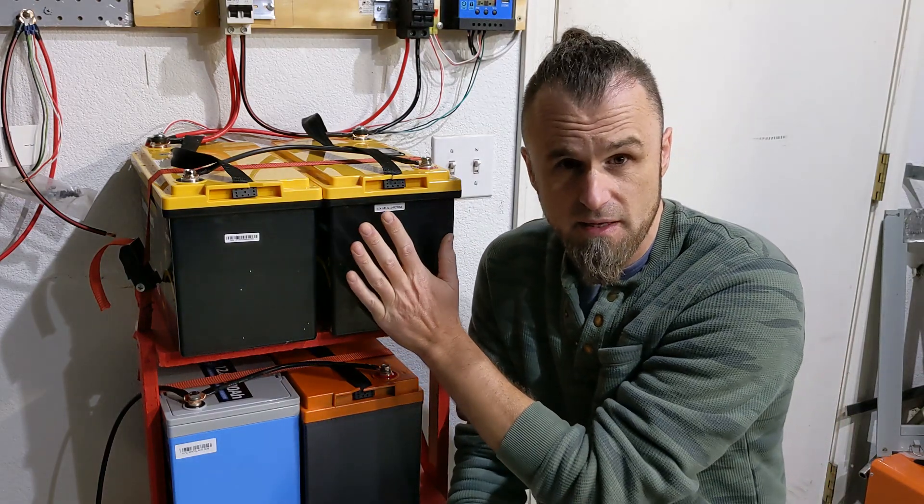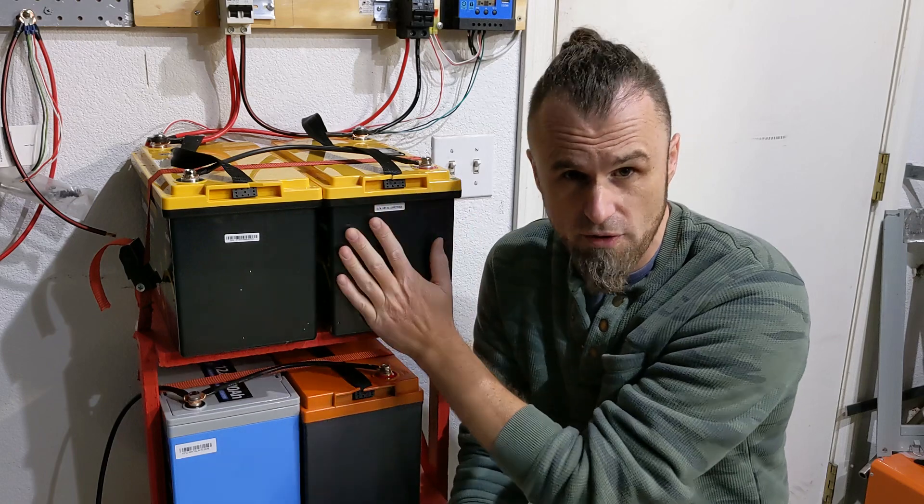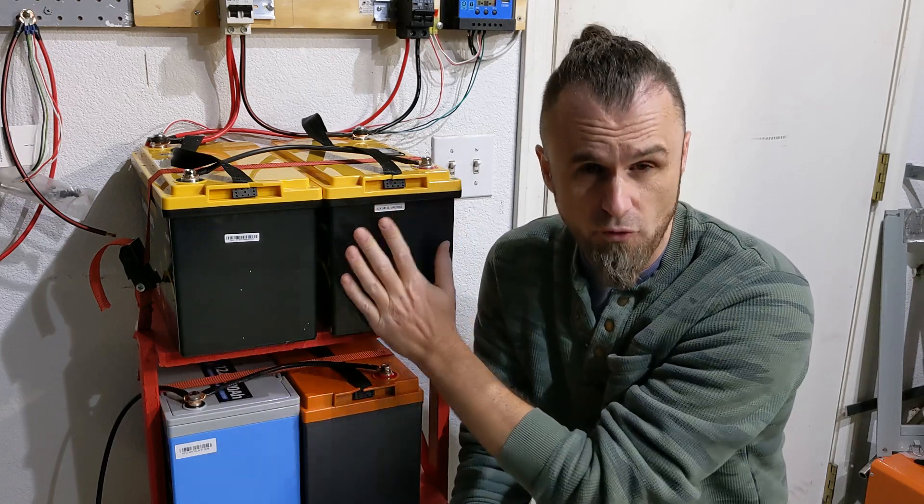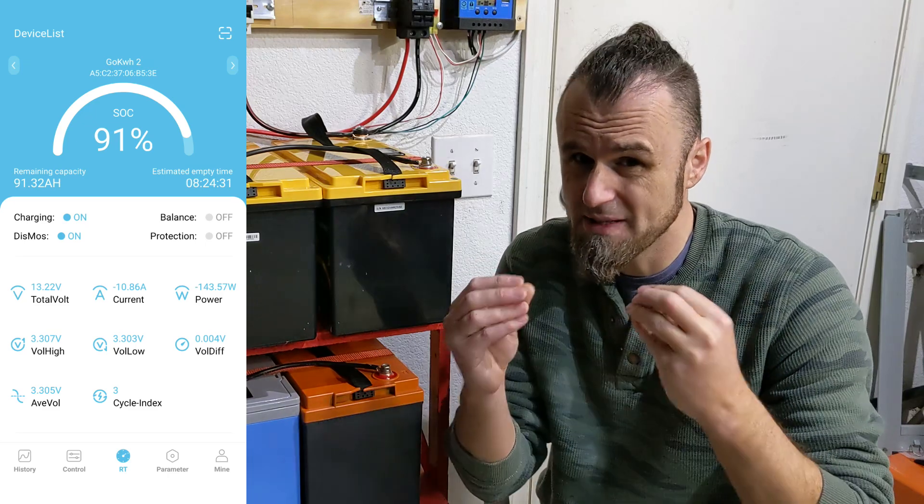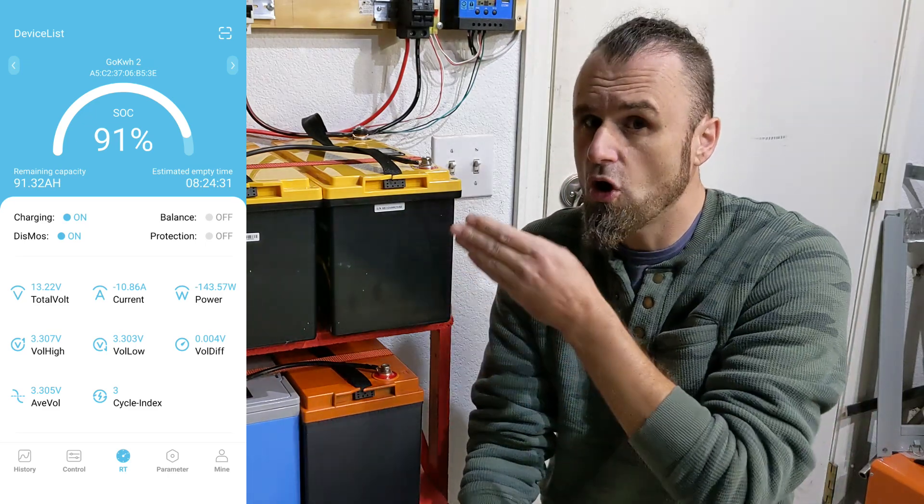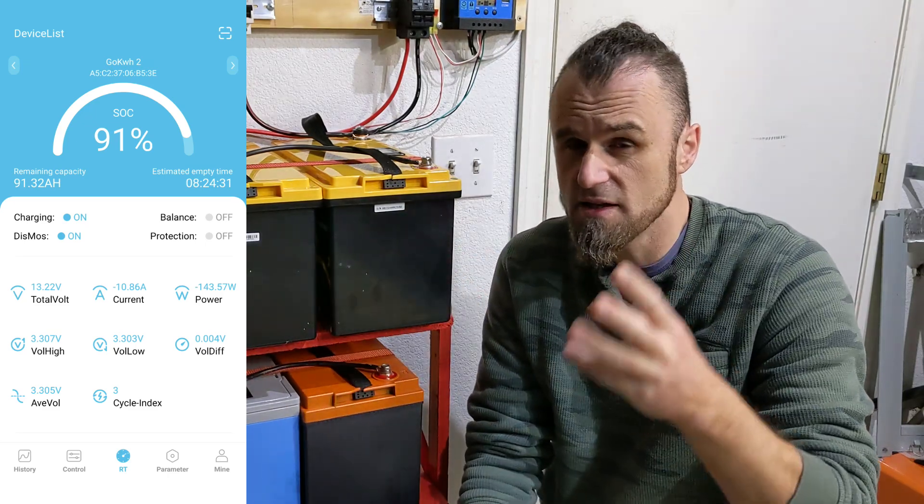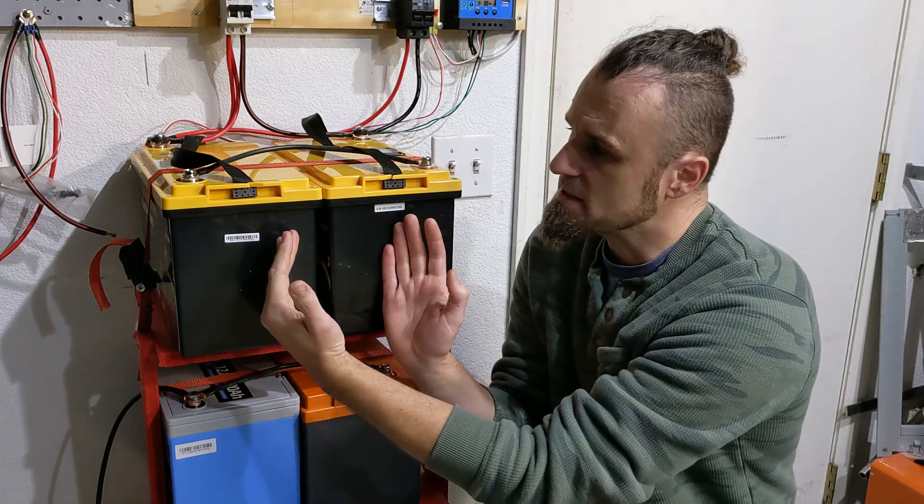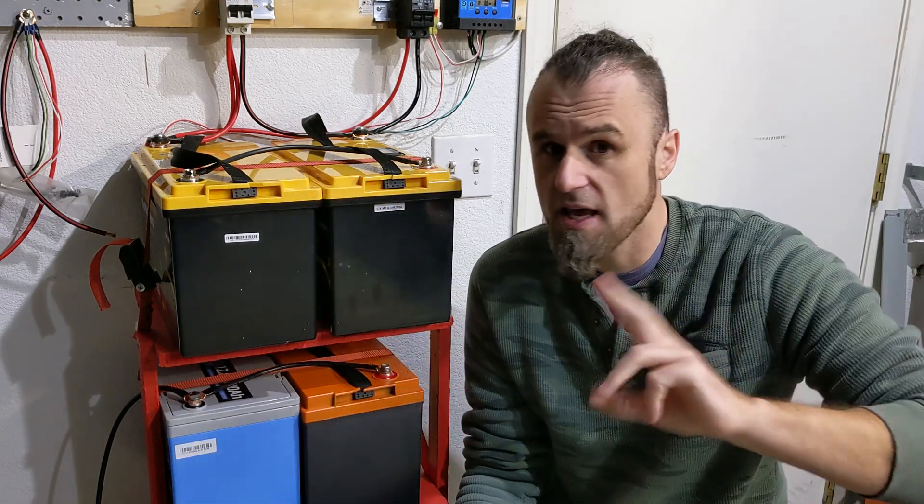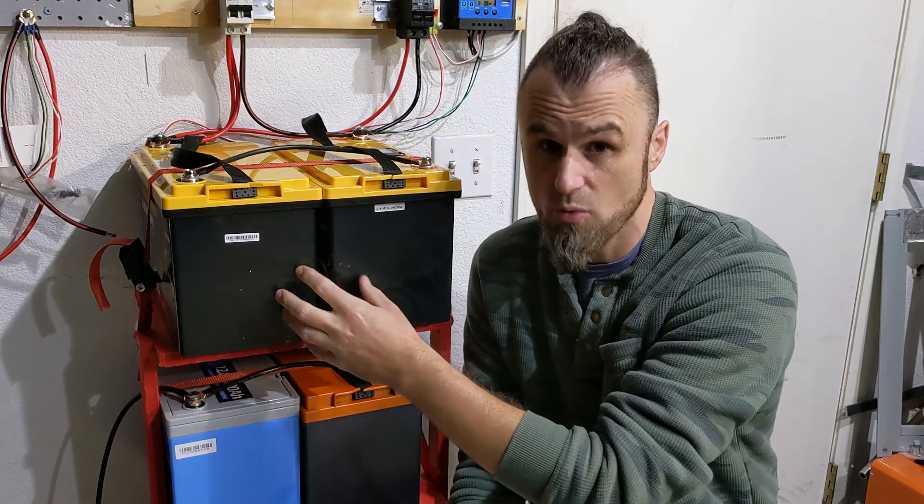These batteries are made in 12 volt, 24 volt, 36 volt, 48 volt, and they have a BMS - a battery management system that can control all the cells. This one has four cells in it, each one is like three volts, that's why it makes it 12 volt. If you hook them up in series, most of the BMSs cannot talk to each other, even from the same brand.